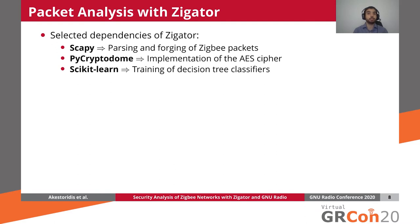Zigator is a software tool that we developed to gain insights from the packets that we captured, and it primarily depends on three Python libraries. The first is the SCAPY library, which Zigator uses to parse and forge Zigbee packets. The second is the PyCryptoDome library, which we use for its AES cipher to implement the cryptographic functions used in Zigbee networks. Finally, we also use the scikit-learn library to train decision tree classifiers — for example, to identify encrypted packet types using only the unencrypted header fields available to an outsider.